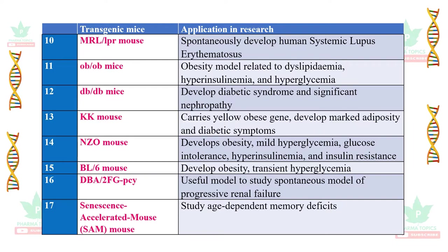The MRL/lpr mouse spontaneously develops human systemic lupus erythematosus. ob/ob mice are a model related to dyslipidemia, hyperinsulinemia, and hyperglycemia. db/db mice develop diabetic syndrome and significant nephropathy. The KK mouse carries a yellow obese gene, develops marked adiposity and diabetic symptoms. The NZO mouse develops obesity, mild hyperglycemia, glucose intolerance, hyperinsulinemia, and insulin resistance.